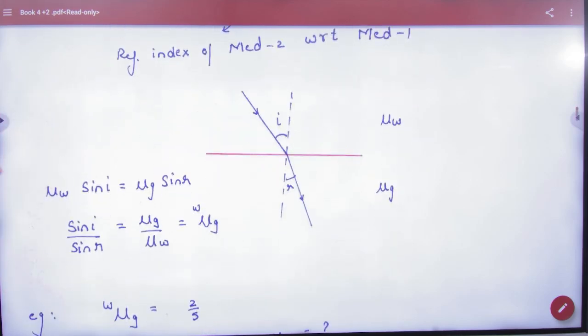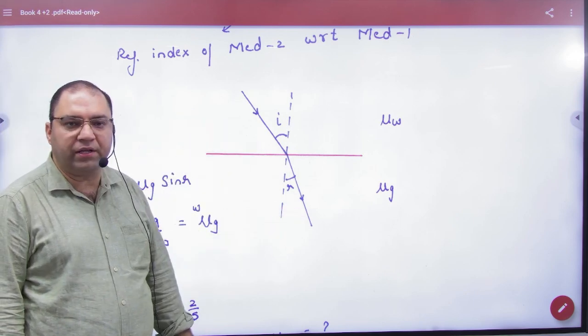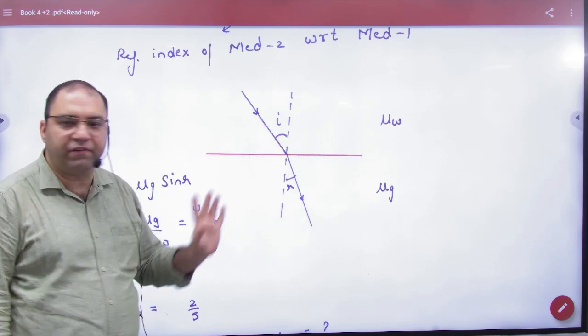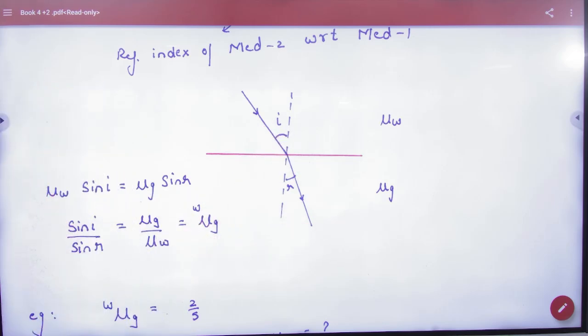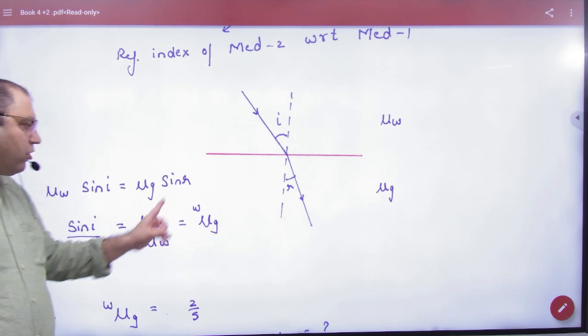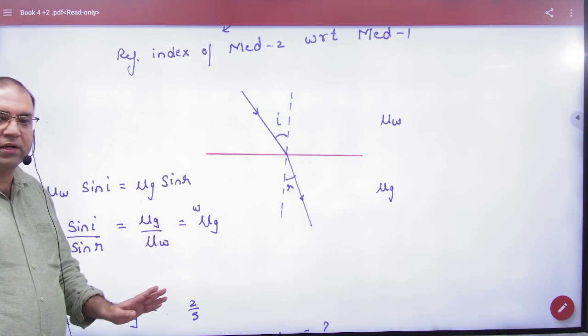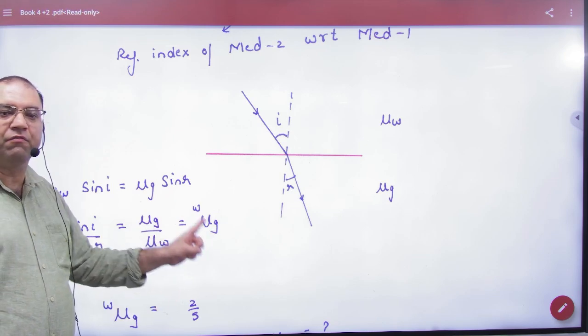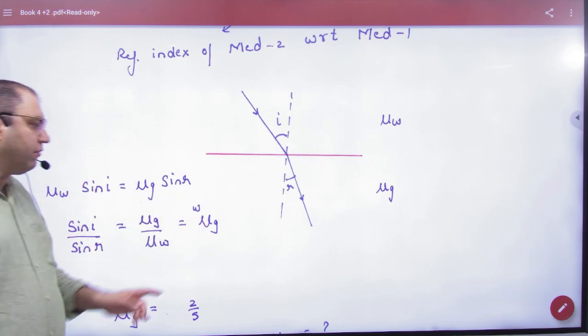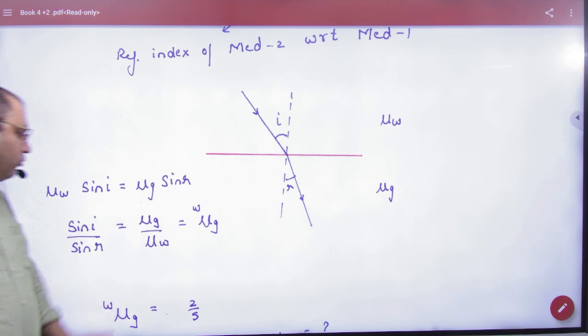Same law of refraction: light coming from water to glass. μ water sin i equals μ glass sin r. Cross multiply: sin i by sin r equals μ glass by μ water. Glass is on top so it goes to the bottom, water is on bottom so it comes to the top. This becomes the refractive index of glass with respect to water, not water with respect to glass, but glass with respect to water.